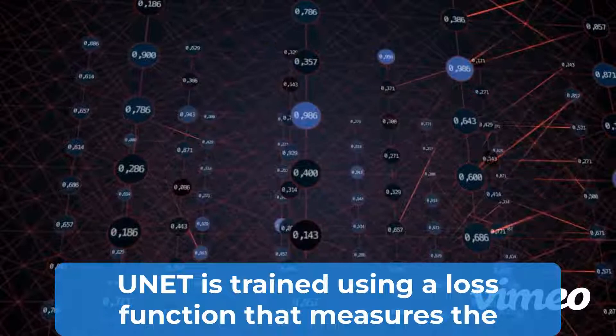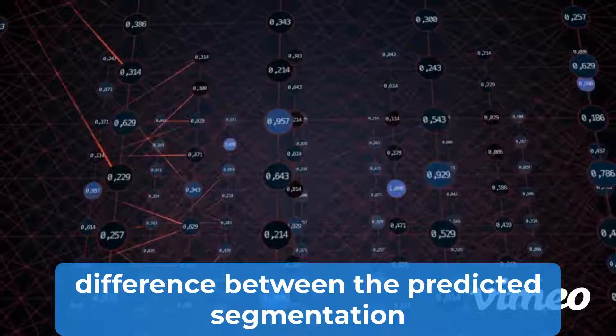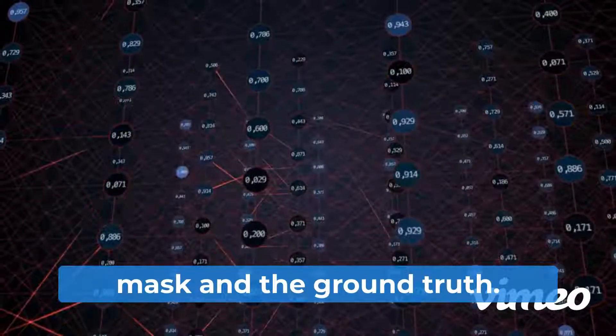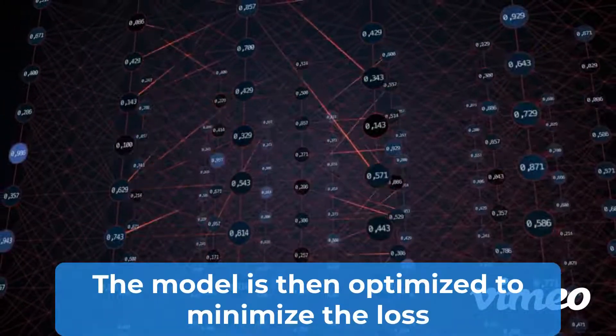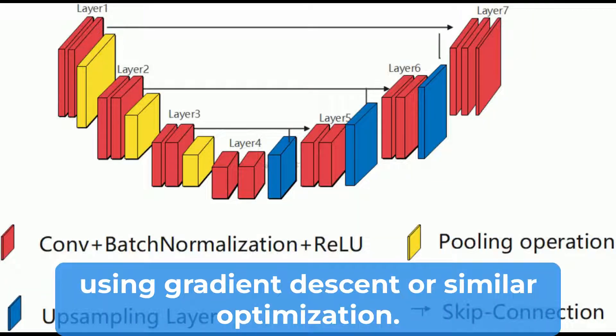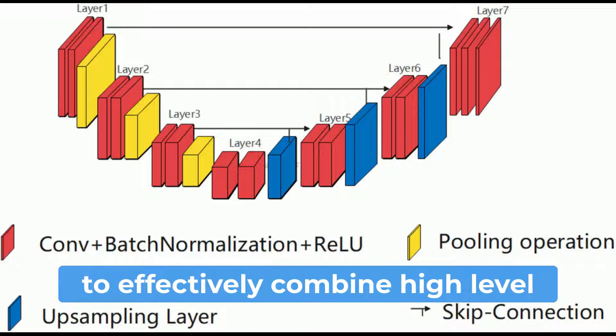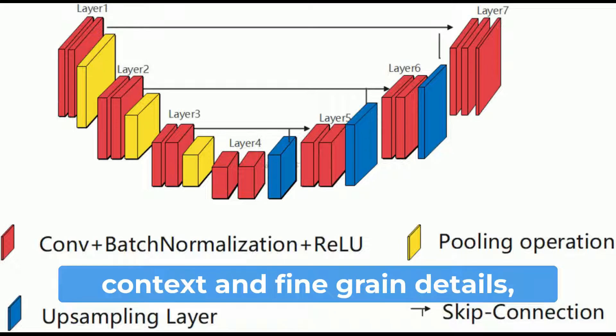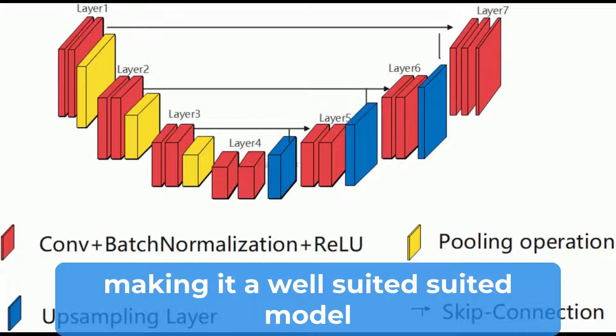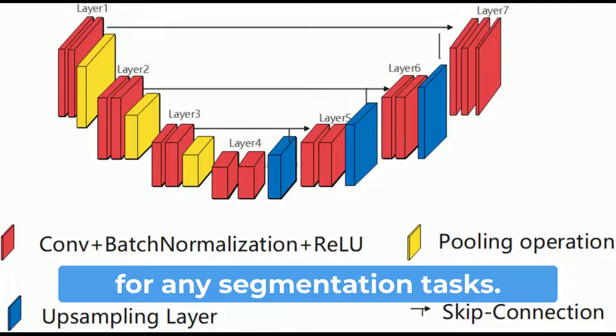The UNET is trained using a loss function that measures the difference between the predicted segmentation mask and the ground truth mask. The model is then optimized to minimize the loss using gradient descent or a similar optimization algorithm. Overall, the U-shaped architecture of UNET allows it to effectively combine high-level context and fine-grained details, making it a well-suited model for image segmentation tasks.